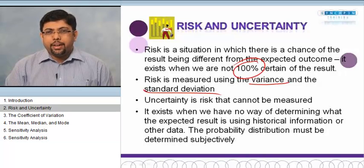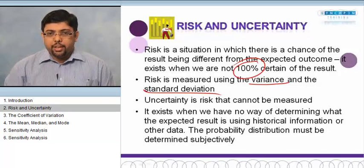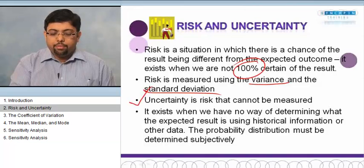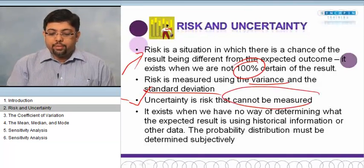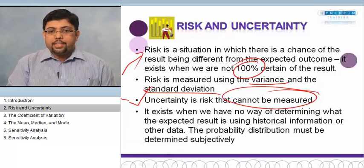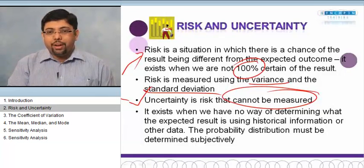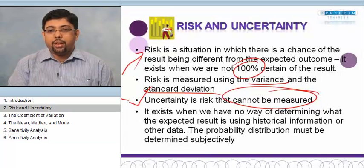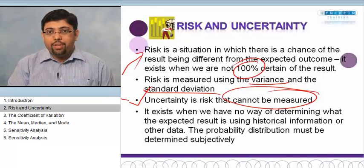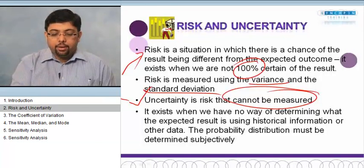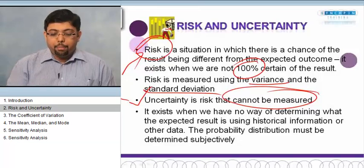Uncertainty is a risk that cannot be measured. Uncertainty is something which is a part of the risk, but this cannot be measured. It exists when we have no way of determining the expected result using historical information or other data. We can always measure the risk, but we can never measure the uncertainty.